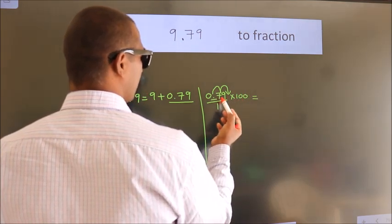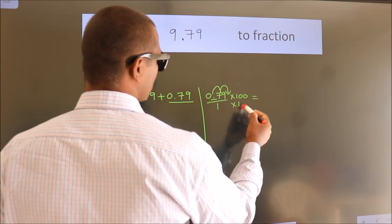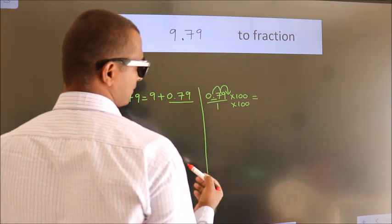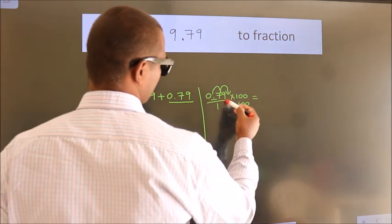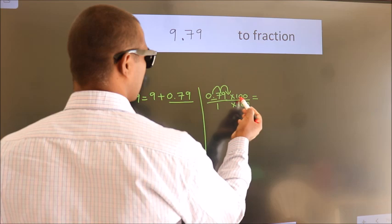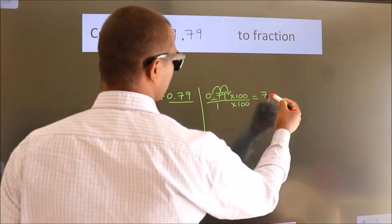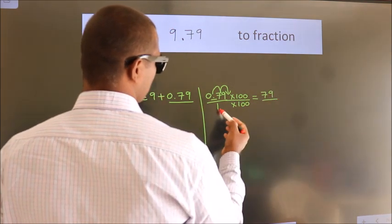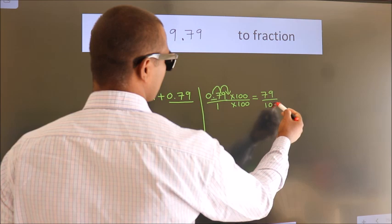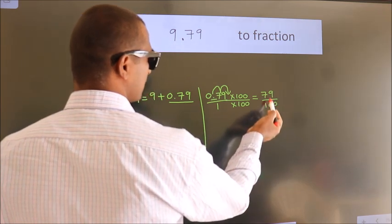Whatever you are multiplying in the numerator, in the denominator also do the same. Next, 0.79 into 100 is 79. 1 into 100 is 100. This is the fraction we got.